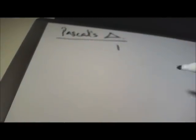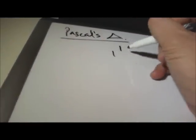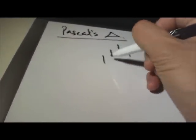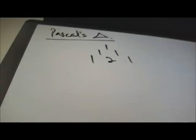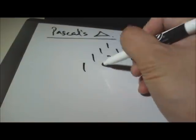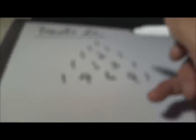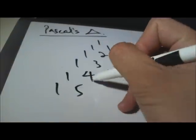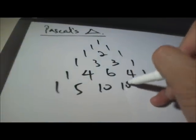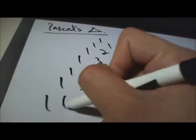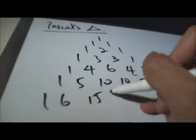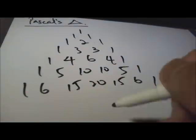Pascal's triangle starts with 1, then 1 1, then 1 2 1, then 1 3 3 1, then 1 4 6 4 1, then 1 5 10 10 5 1, then 1 6 15 20 15 6 1, and so on.